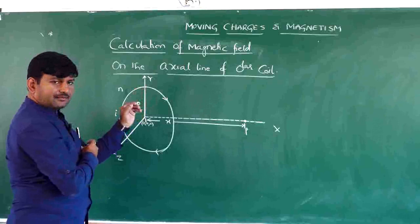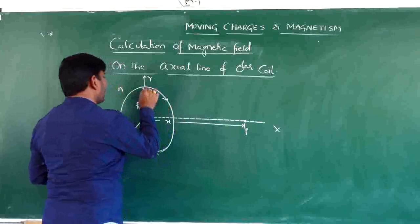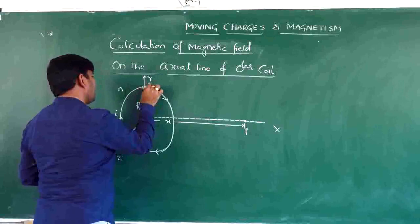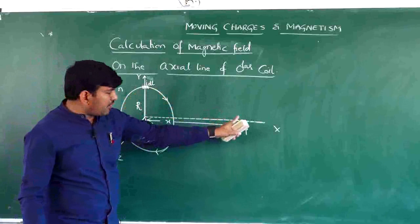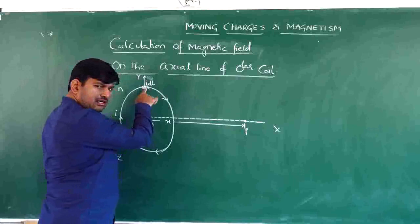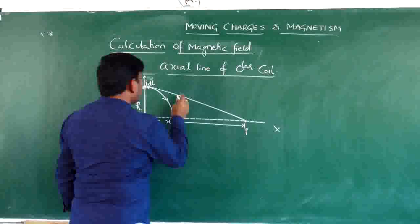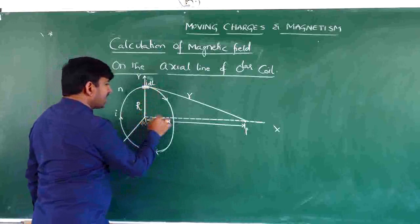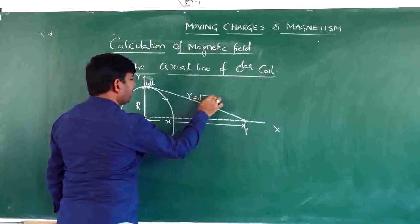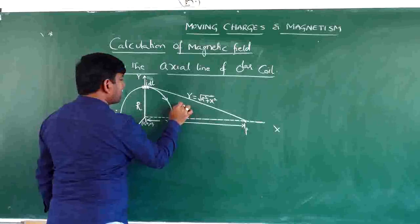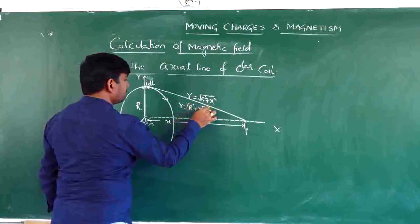In order to calculate the magnetic field at this point, let me choose a current element — a small elemental length of conductor dL. The current element is equal to i·dL. I draw a displacement vector from the current element to the point; let the length of this be r. This is a right-angle triangle, so by Pythagoras' theorem, small r = √(R² + x²), which can also be written as r = (R² + x²)^(1/2).